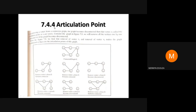Next is the articulation point, similar to the bridge concept. If removing a vertex causes a disconnection in a connected graph, that vertex is called an articulation point. For example, if you remove vertex v4 from the graph, v5 becomes disconnected from the remaining four vertices — therefore v4 is an articulation point.